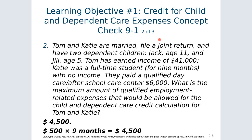Tom and Katie are married filing jointly with two dependent children (ages 11 and 5). Tom has earned income of $41,000; Katie was a full-time student. They paid $6,000 to a qualified daycare center. Because Katie was a full-time student for 9 months, she is only allowed $500 per month for the months she attended school. Therefore, the maximum qualifying employment-related expenses for the credit calculation is $4,500.